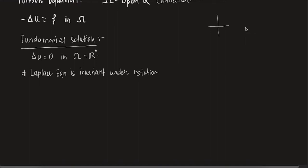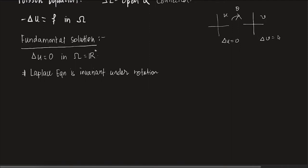So the new coordinate axis is after a rotation by theta. For that change, U may get changed to V. But if Laplace of U equals 0 in the original coordinate, then in the new coordinate, Laplace of V will also be 0. So basically, if U is harmonic, V is also harmonic under a rotation. This means the Laplace equation is invariant under rotation.